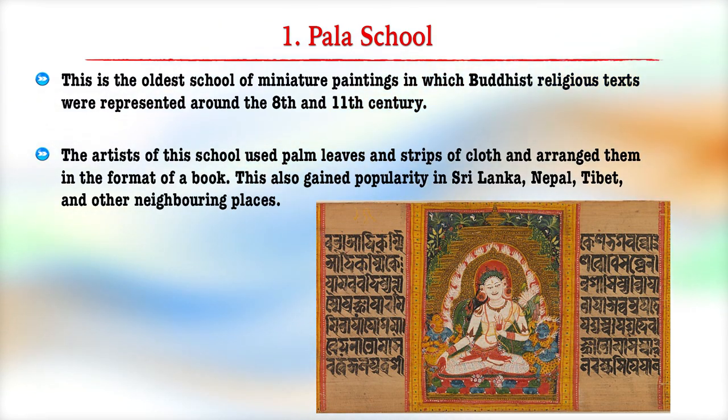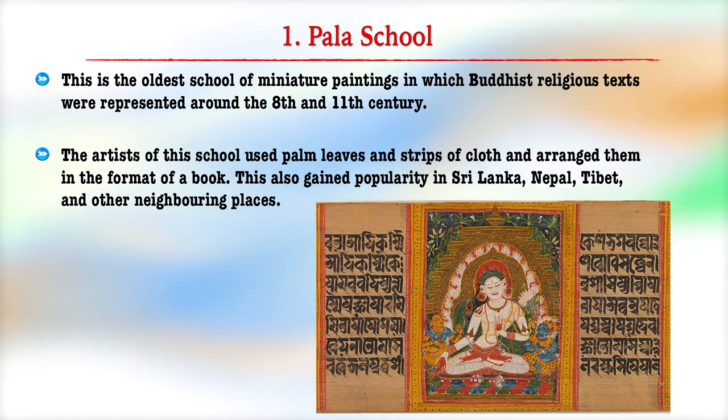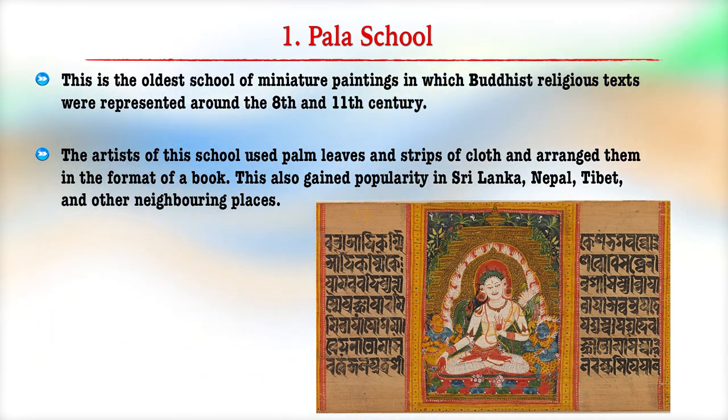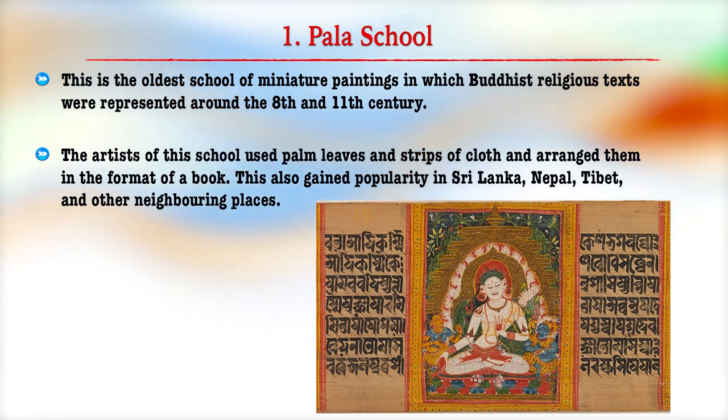The artists of the Pala school used palm leaves and strips of cloth arranged in the format of a book. This form of painting also gained popularity in Sri Lanka, Nepal, Tibet and other neighboring places. The art from the Pala school can be recognized by the symbolic use of colors in skillful line drawing. The colors were derived from natural sources and the themes revolved around the life of Lord Buddha and other deities.